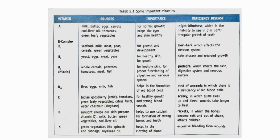Next is Vitamin D. Sources include sunlight — you are always advised to sit in sunlight for some time every day because it helps our skin to prepare Vitamin D. Other sources are milk, butter, green vegetables, and cod liver oil. Vitamin D helps the body use calcium for the formation of strong bones and teeth. Its deficiency causes rickets, in which bones become soft and out of shape, especially affecting children.